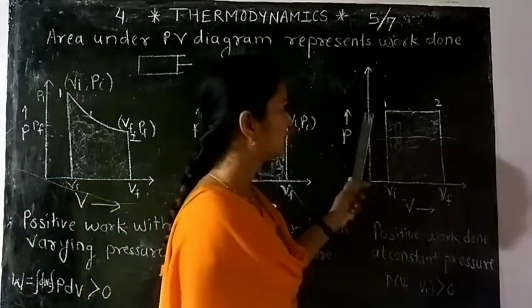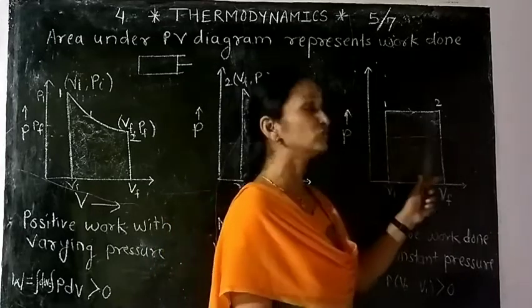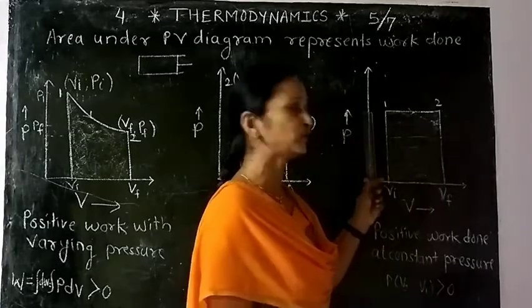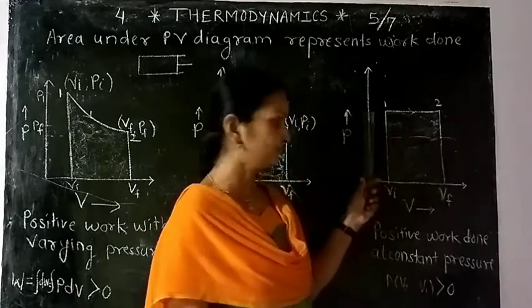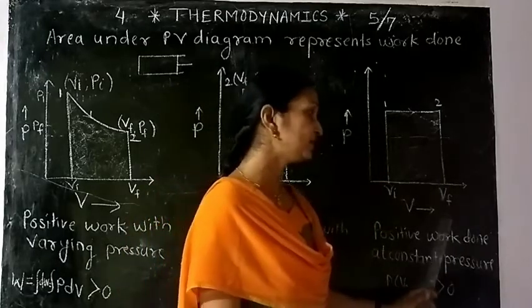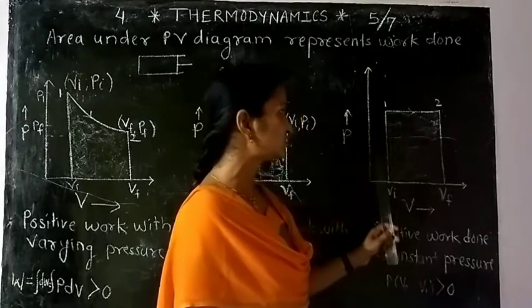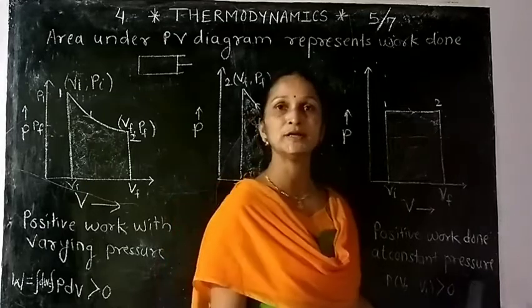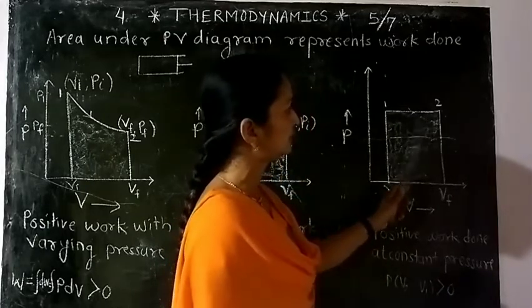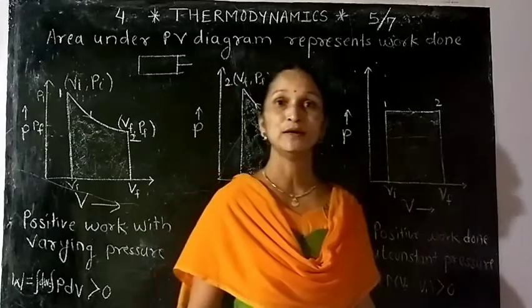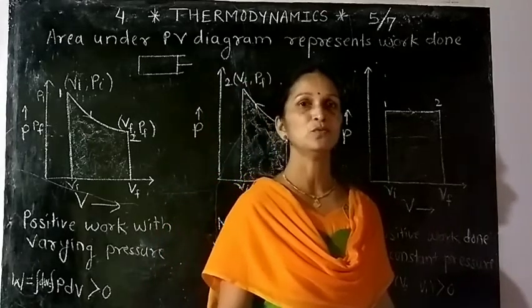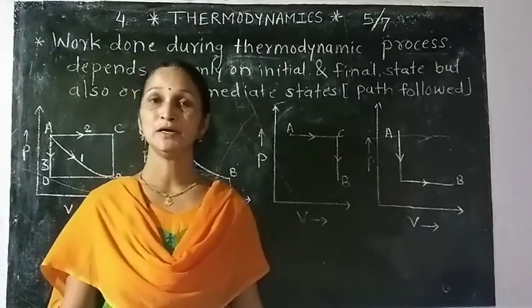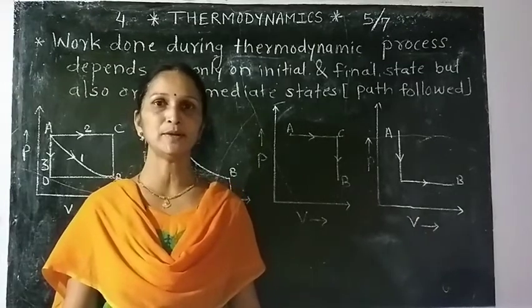Next, if the change is carried out at constant pressure, the change in volume occurs at constant pressure. The pressure coordinate is constant in the diagram, so positive work is done at constant pressure. The area under the PV diagram represents the positive work done during the thermodynamic process.